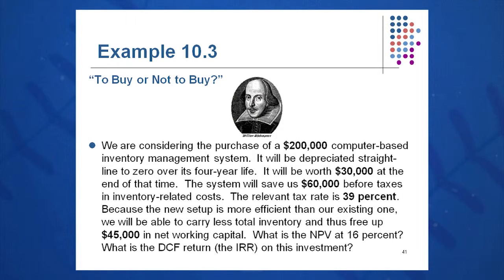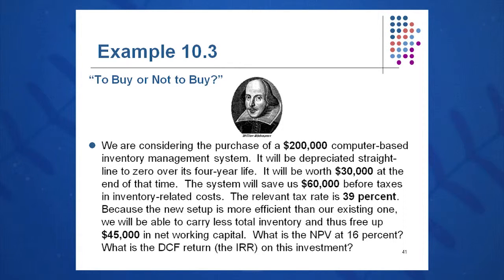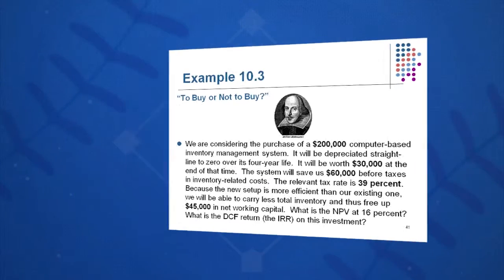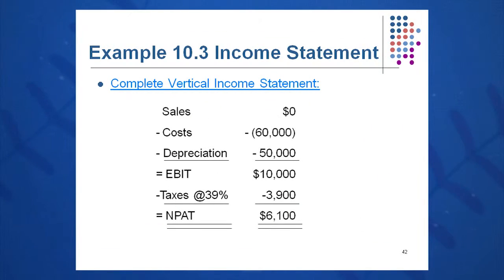Here's an example: buy or not buy a $200,000 piece of equipment that will manage our inventory better. Depreciate straight line to zero over a four-year life, worth $30,000 at the end of the four-year period. Since it's fully depreciated to zero, I can sell it but I'll have to pay tax on the gain. The system will save us $60,000 before taxes each year. Tax rate of 39%, and it will cost $45,000 in net working capital to start this project. What's the NPV at 16% and what's the IRR?